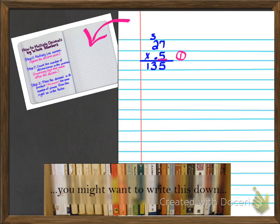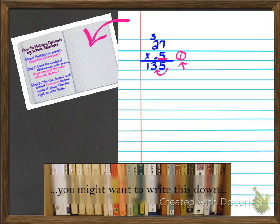Moving on to step three: I like to start my pencil at the end of the product. Since I have one decimal place in my problem, I'm going to go in just one spot from the right, traveling from right to left. I went one spot because in my problem I only had one number that came after the decimal. So my decimal goes right between the 3 and the 5, giving a final answer of 13.5.